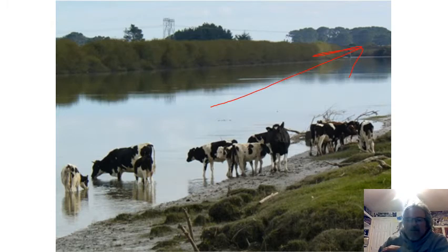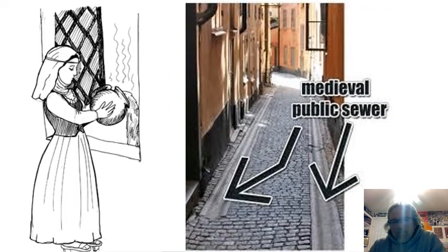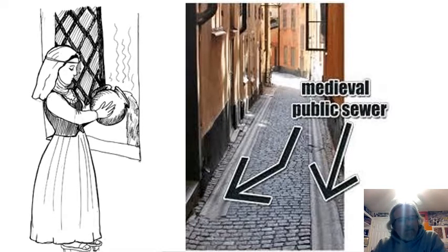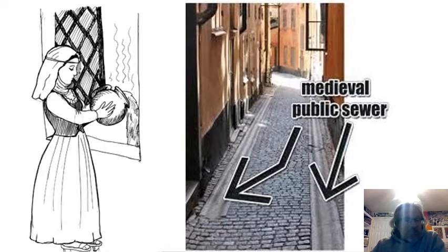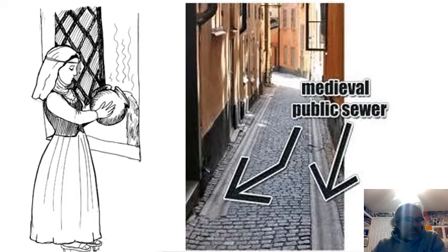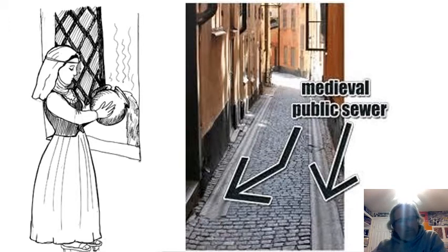In medieval times before good indoor plumbing, people would use a chamber pot and then dump it out the window into a gutter. When it rained, that waste would wash into the river, which meant city rivers were not safe to drink — they had way too much bacteria. People drank ale and beer so much in those times because it was fermented and brewed, which killed harmful bacteria, whereas river water had all that nastiness in it.